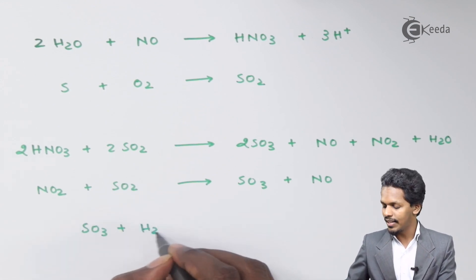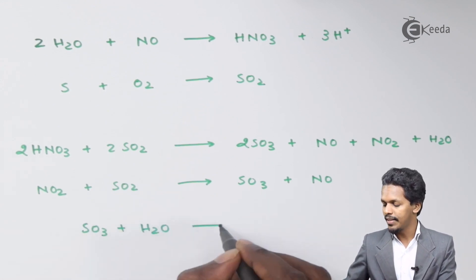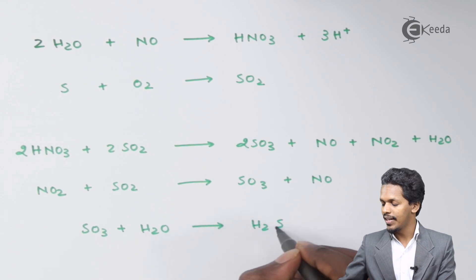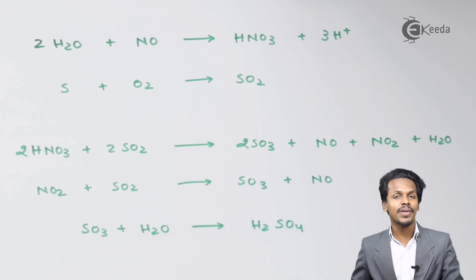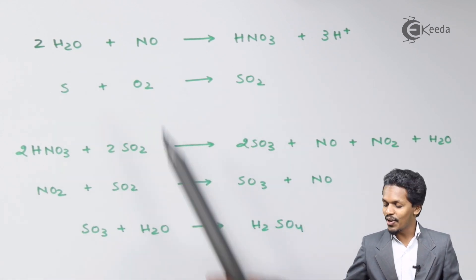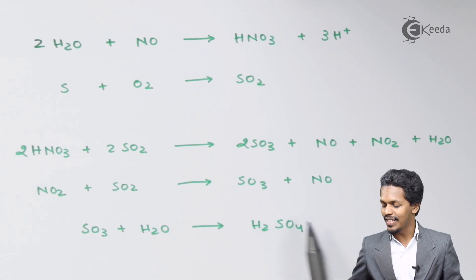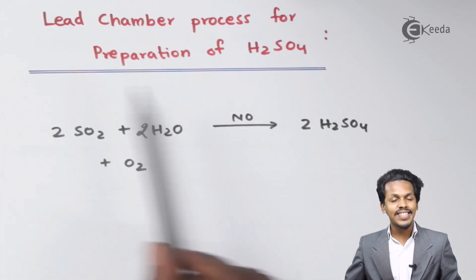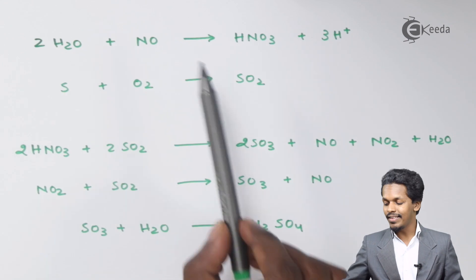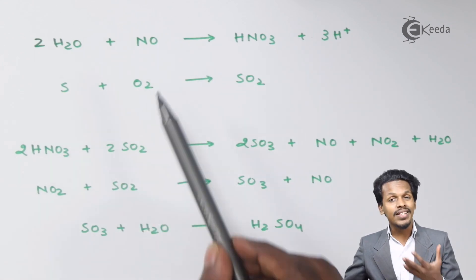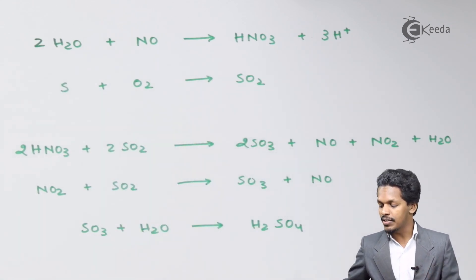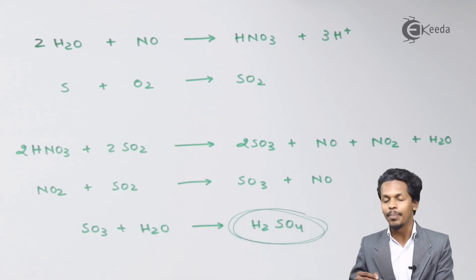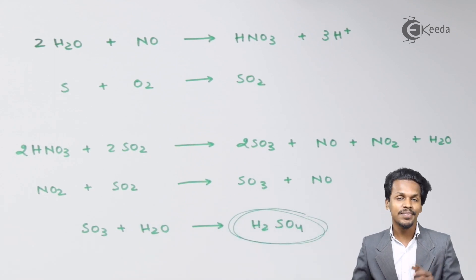This SO₃, whenever it is dissolved in water (H₂O), produces H₂SO₄ — sulphuric acid. This is how the reaction proceeds, and this is how we convert the multi-step process to ultimately obtain sulphuric acid as the main product.